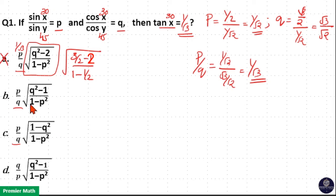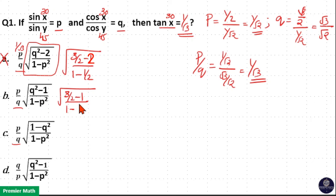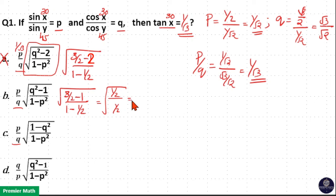Now here root of q squared minus 1: q squared is 3 by 2 minus 1, divided by 1 minus p squared which is 1 by 2. Now 1 minus 1 by 2 is 1 by 2, and 3 by 2 minus 1 is 1 by 2, which means this term is 1. That means this is your answer. Option B is your answer.